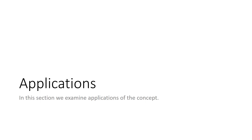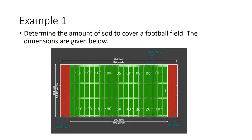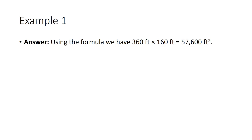Application: determine the amount of sod needed to cover a football field. The dimensions are 360 feet by 160 feet, including the end zones. Using the formula: 360 feet times 160 feet equals 57,600 square feet. This measurement is chosen because it uses whole numbers and sod is typically measured in square footage.